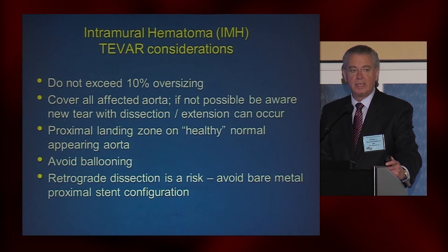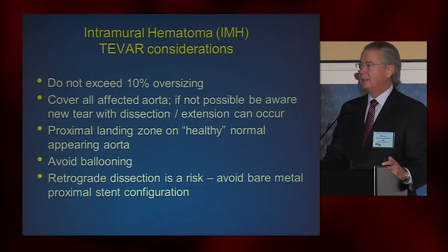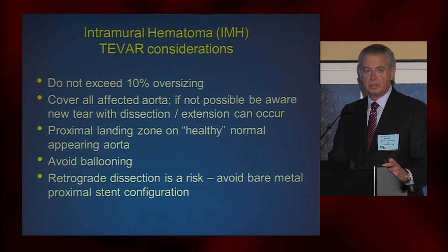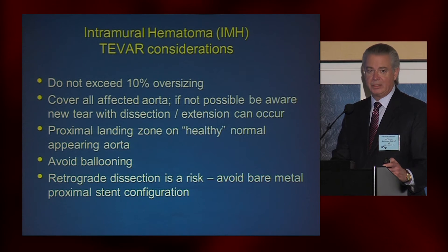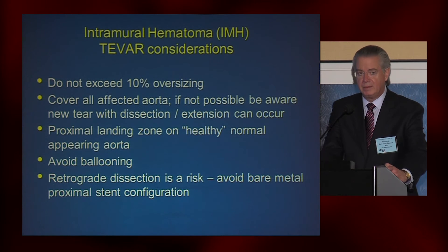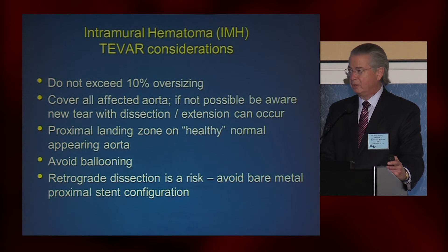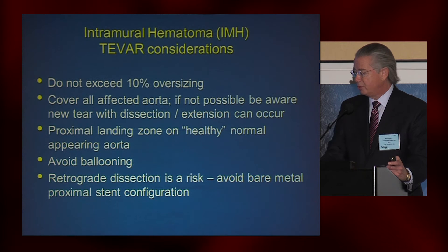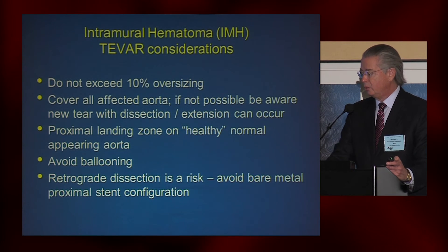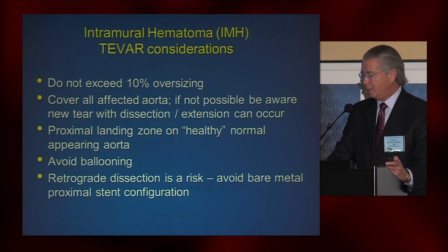When using an endovascular graft for intramural hematoma, do not exceed more than 10% oversizing. Covering all affected aorta is ideal; if not possible, be aware you can cause a new tear and extension of the intramural hematoma. I had a patient where I placed a graft just above the hematoma — about 15 cm from the left subclavian — and three weeks later she presented with retrograde intramural hematoma into the aortic arch. Ensure the proximal landing zone is on healthy, normal-appearing aorta, avoid ballooning, and avoid bare metal proximal stent configurations, as retrograde dissection is a clear risk.